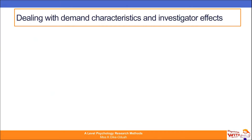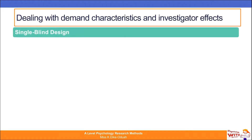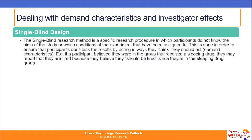Dealing with demand characteristics and investigator effects. A single blind design is a specific research procedure in which participants do not know the aims of the study or which conditions of the experiment they have been assigned to. This is done to ensure participants don't bias the results by acting in ways they think they should — which is demand characteristics. For example, if a participant believed they were in a sleeping drug group, they may report tiredness because they believe they should. Removing this by not revealing the condition minimises demand characteristics.